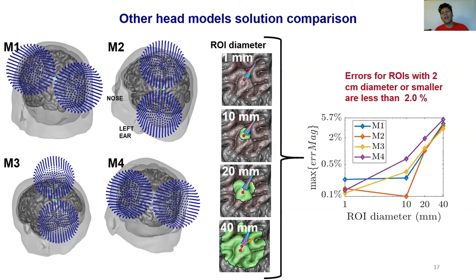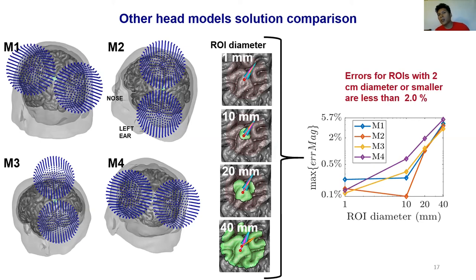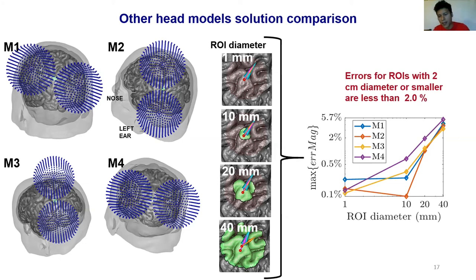The unidirectional approximation becomes less accurate as ROI diameter increases, but for ROIs less than 20 millimeters in diameter the error is below 2 percent, meaning we can get a very good estimate of the electric field magnitude. The question then is: if we optimize this proxy metric, do we converge to the correct optimum coil placement? The answer is yes.